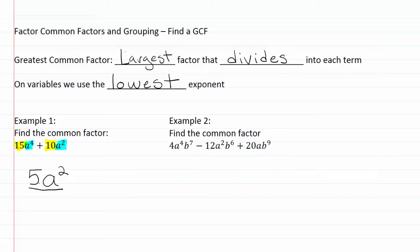Let's go on to example two. Find the common factor in 4a to the fourth b to the seventh minus 12a to the second b to the sixth plus 20ab to the ninth.